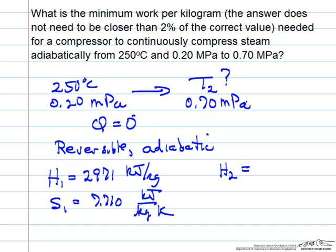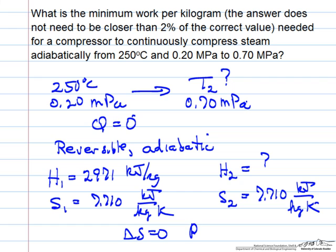We don't know H2 yet, but we know S2 = 7.710 kilojoules per kilogram Kelvin. We know that because delta S is zero for reversible adiabatic process.